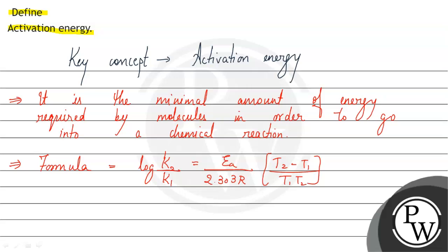Here T1 and T2 are the temperatures in Kelvin, and K2 and K1 are rate constants.